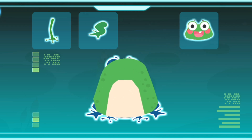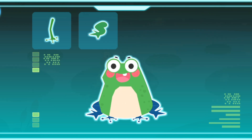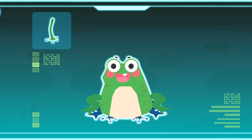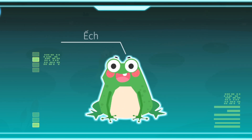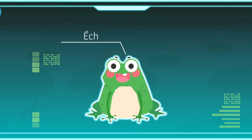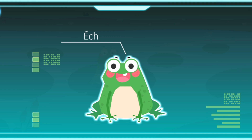Bụng to, chân sâu khỏe, chân trước ngắn — Ếch! Ếch trải qua một lần biến đổi hình dạng hoàn toàn. Nòng nọc chính là Ếch lúc nhỏ. Khi lớn lên, chúng sẽ trở thành Ếch. (Big belly, strong hind legs, short front legs — Frog! Frogs undergo a complete transformation. Tadpoles are baby frogs. When they grow up, they become frogs.)